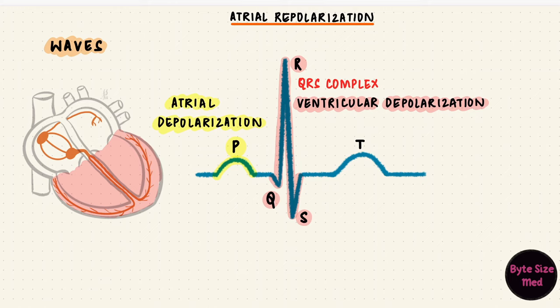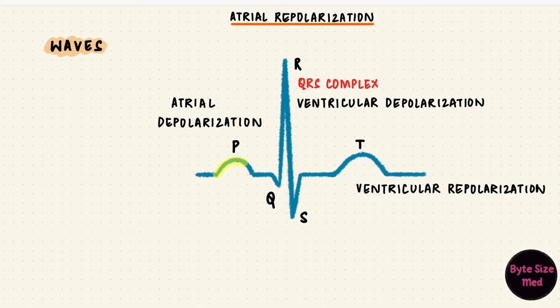Ventricular depolarization is followed by ventricular repolarization. That repolarization is represented by the T wave. Atrial depolarization followed by ventricular depolarization and then ventricular repolarization. That's waves P, Q, R, S, and T.